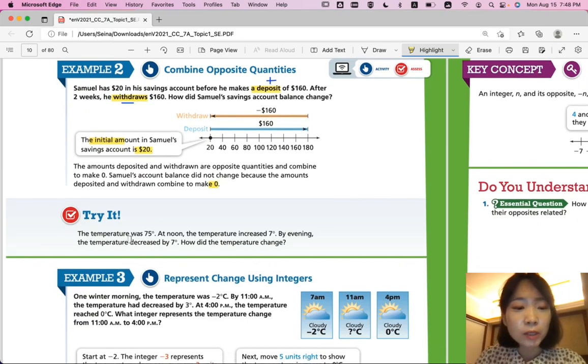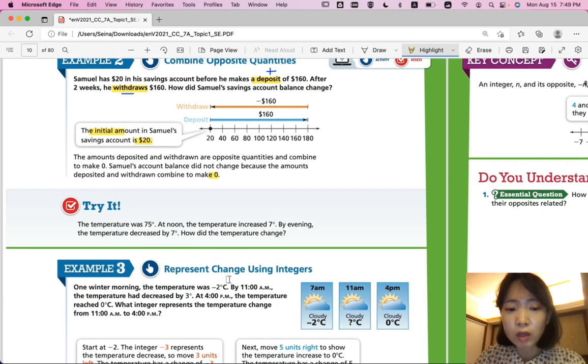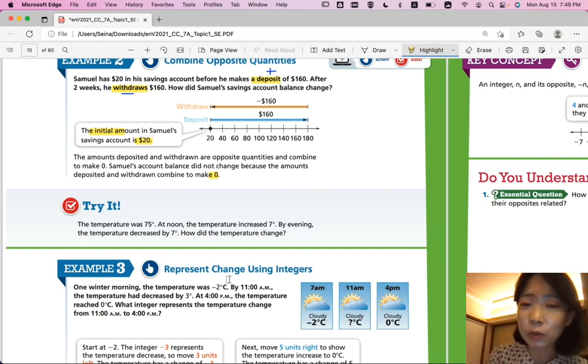So let's look at try it. The temperature was 75 degrees. At noon, the temperature increased 7 degrees. By evening, the temperature decreased by 7 degrees. How did the temperature change? So it starts at 75 degrees. It goes up 7. And it comes down 7 again. How did it change? What is the change?